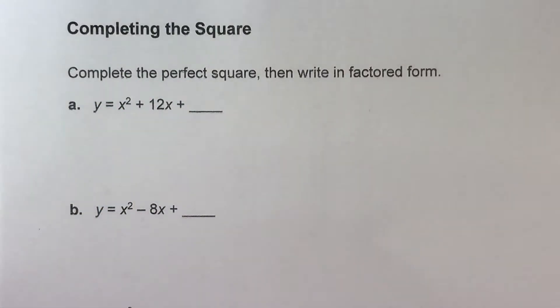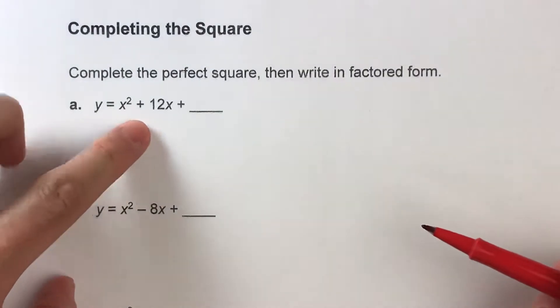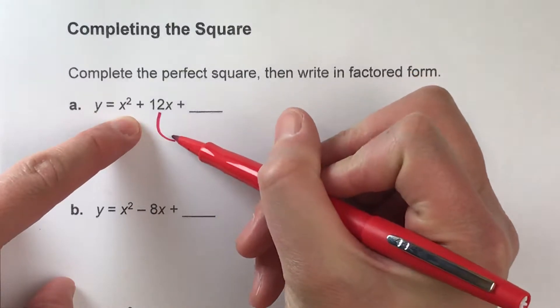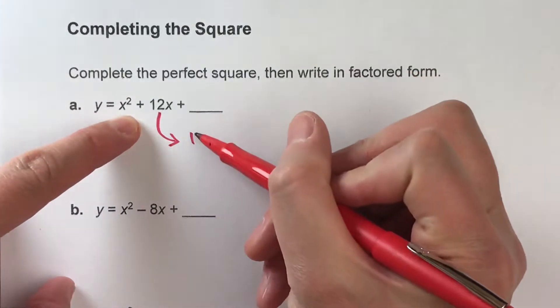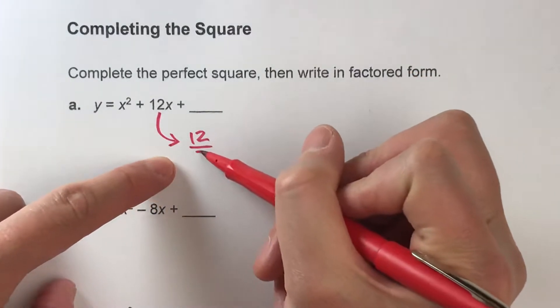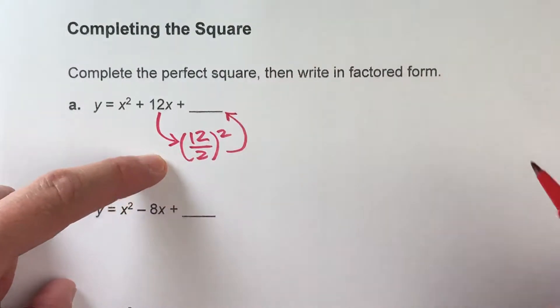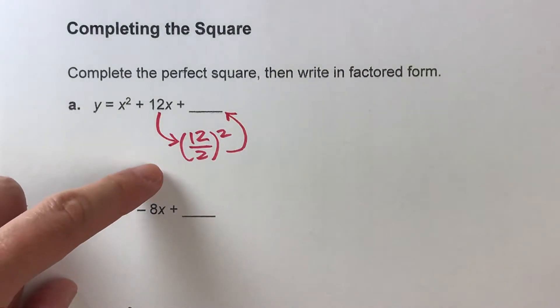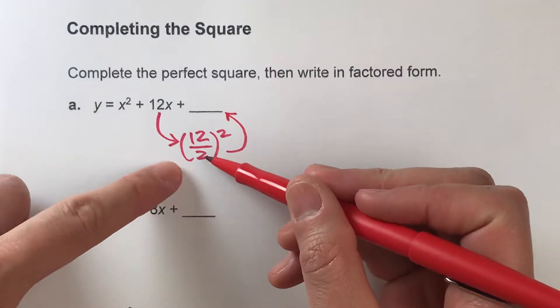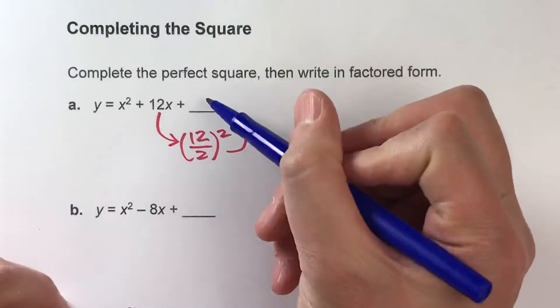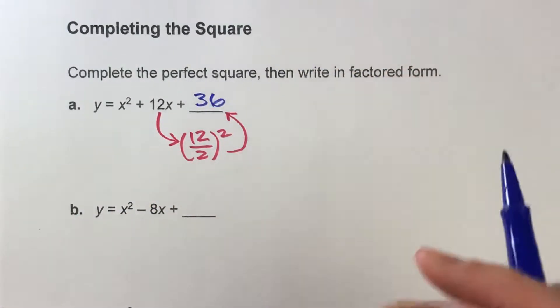Now what you have to know is there's a little formula for figuring out that third term. What you do is you take the number next to x and divide it by 2 and square that answer and that will get us that last term. So in this case 12 divided by 2 is 6, 6 squared is 36 so we know that this third term is 36.